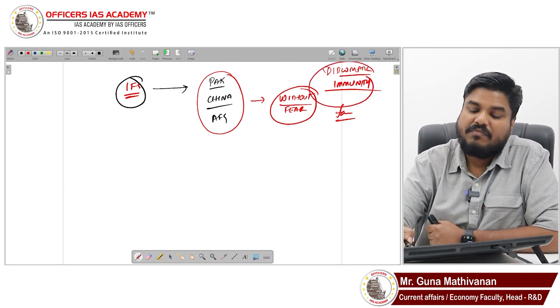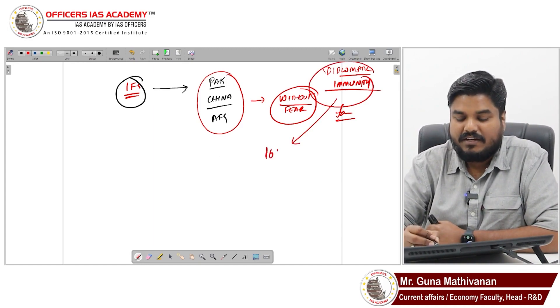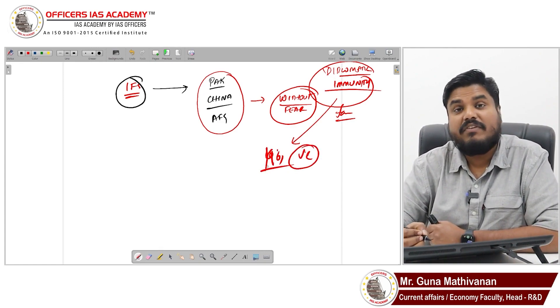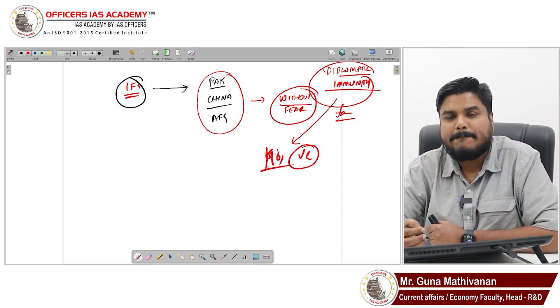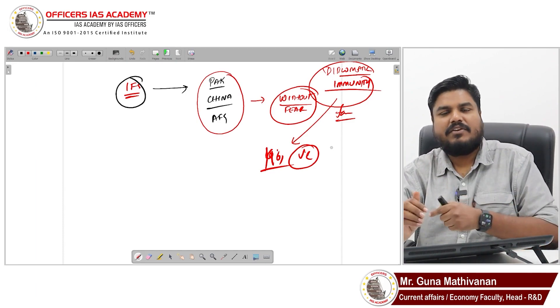So that diplomatic immunity is defined in this 1961 Vienna Convention. This Vienna Convention is about diplomatic immunity.